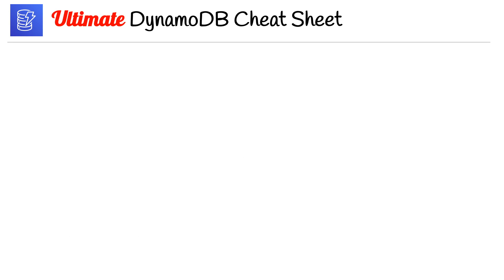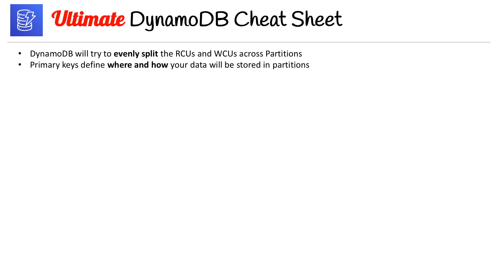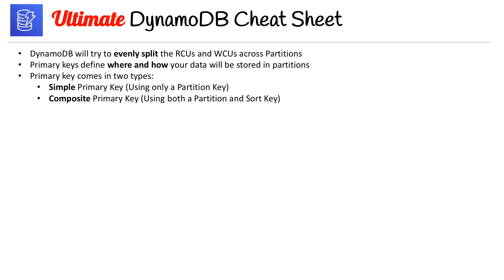On page two of the ultimate DynamoDB cheat sheet: DynamoDB will try to evenly split the RCUs and WCUs across partitions. Primary keys define where and how your data will be stored in partitions. Primary keys come in two types: simple primary keys using only a partition key, and composite primary keys using both a partition and sort key. The partition key is also known as hash, and the sort key is also known as range.